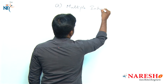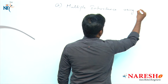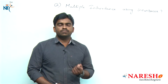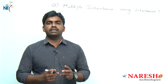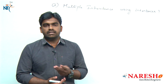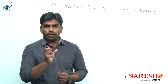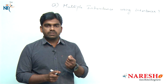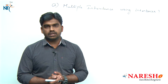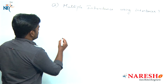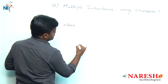So, multiple inheritance using interfaces. First of all, what does multiple inheritance mean? One class is trying to extend more than one class — that is what we call multiple inheritance. Simply put, one object is trying to extend the functionality of more than one object.